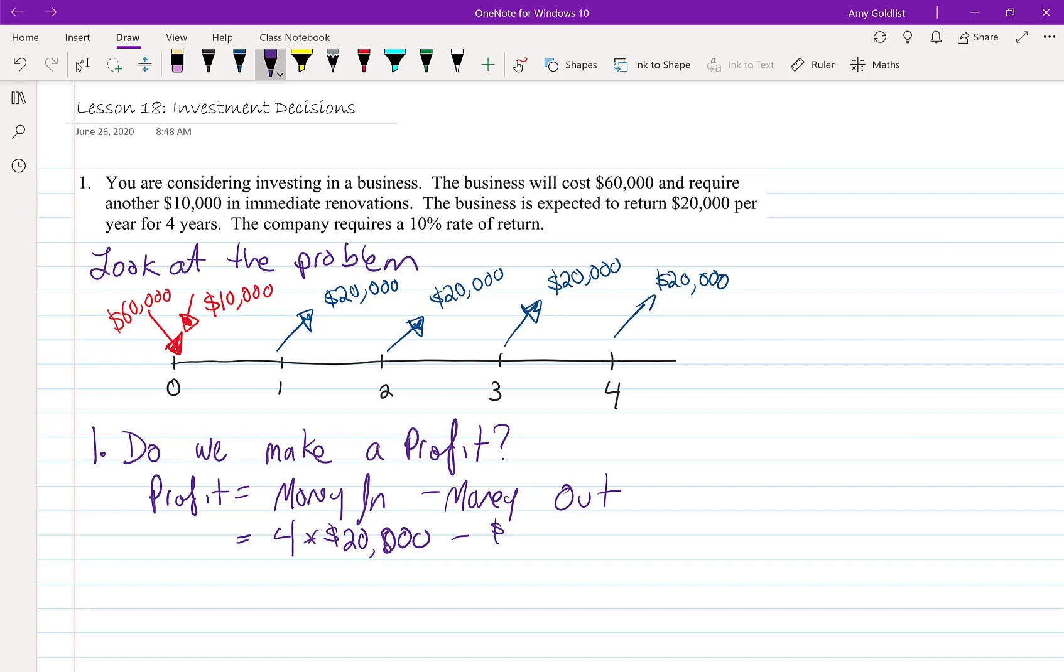Minus $60,000 and $10,000, we could just call that $70,000 because it's all together. When you put that together, we have a $10,000 profit. Yes! If this was negative, we would stop right here and not consider this business anymore.